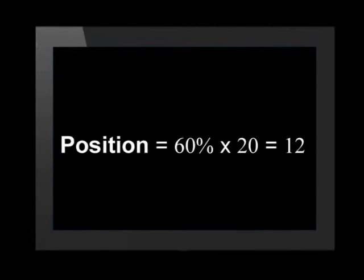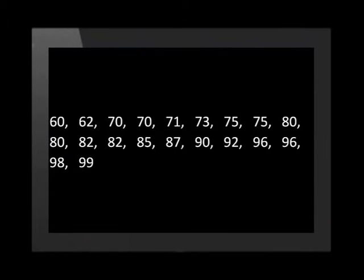Now that we have ordered the numbers, we can work out the position of the 60th percentile. Once we have the position of the mark, we can see what the value of the mark will be. The position of the 60th percentile is 60% times the number of values, which is 20. This gives us 12. Therefore, the 60th percentile lies in position 12 in our list of 20 marks. The mark in position 12 is 82. Therefore, the 60th percentile is 82. This tells us that 60% of the marks are less than or equal to 82, and 40% of the marks are above 82.